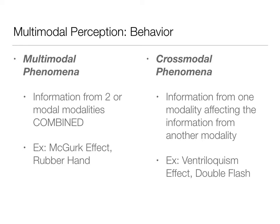Now cross-modal phenomenon is different. When we talk about cross-modal phenomenon, we're talking about information crossing over from one modality into another modality and affecting the perception of that second modality. So multimodal is when two things are really being combined and integrated in equitable ways that give us a better understanding of the whole object, whereas cross-modal phenomenon is information from one modality affecting how we perceive the other modality.